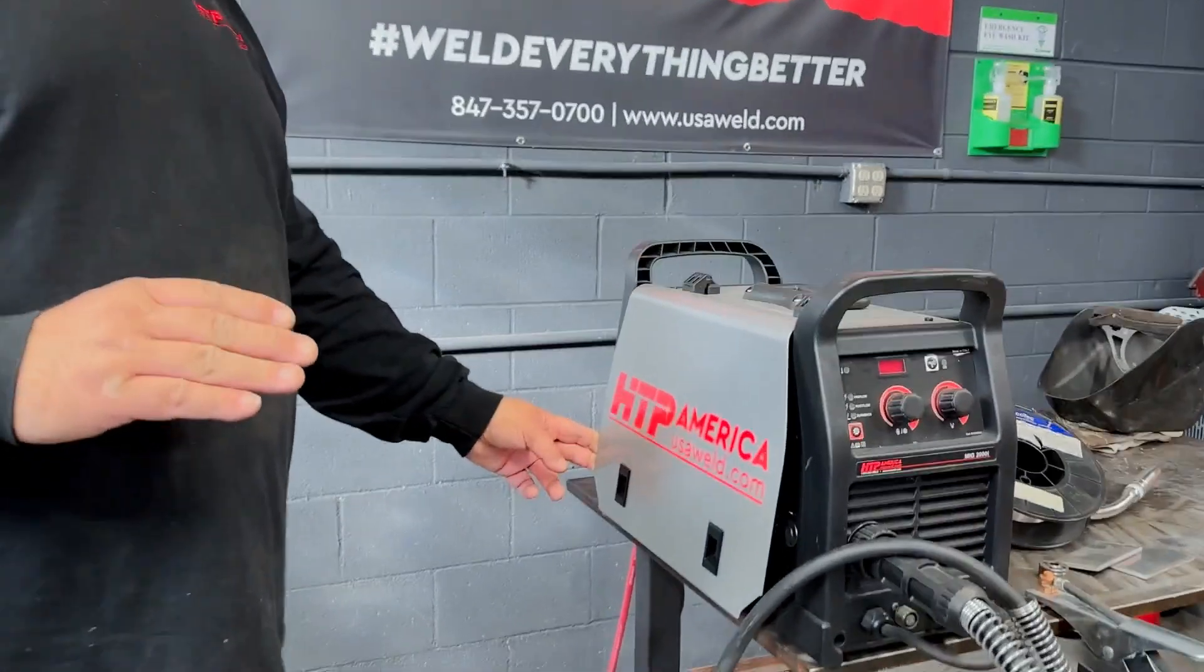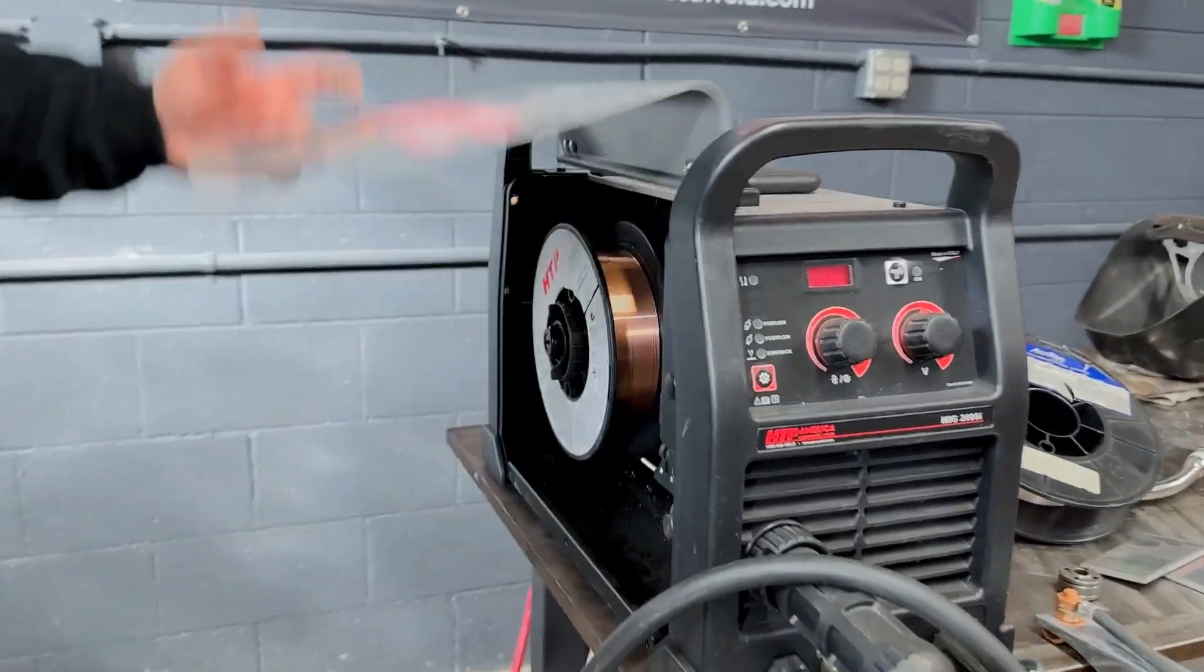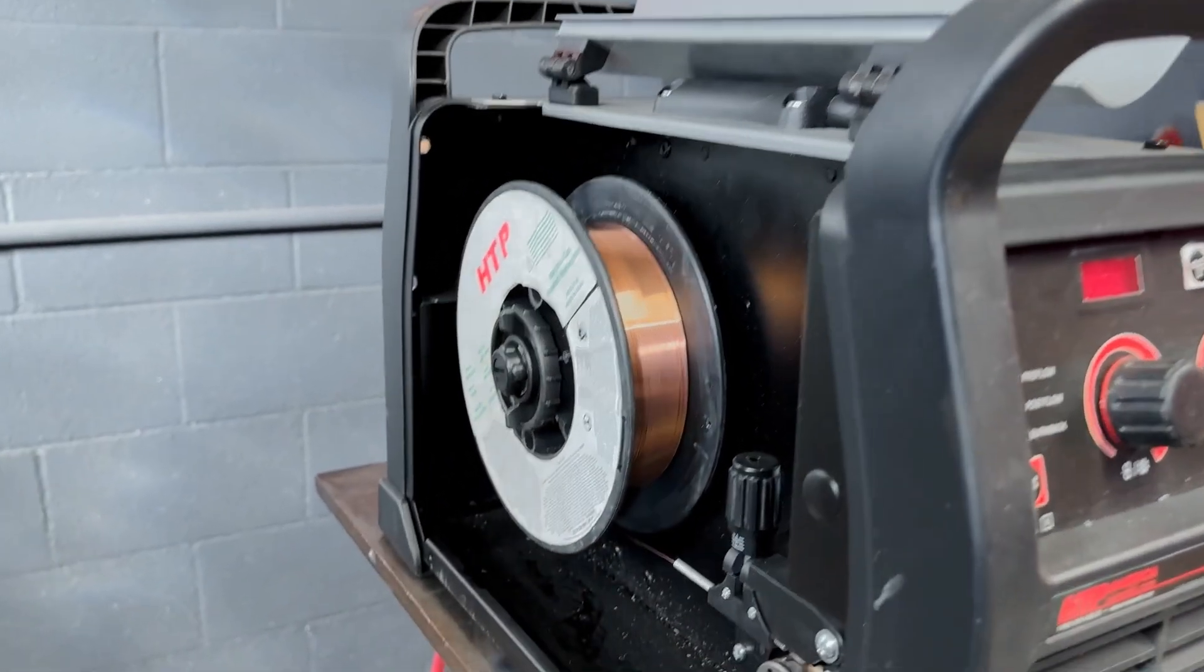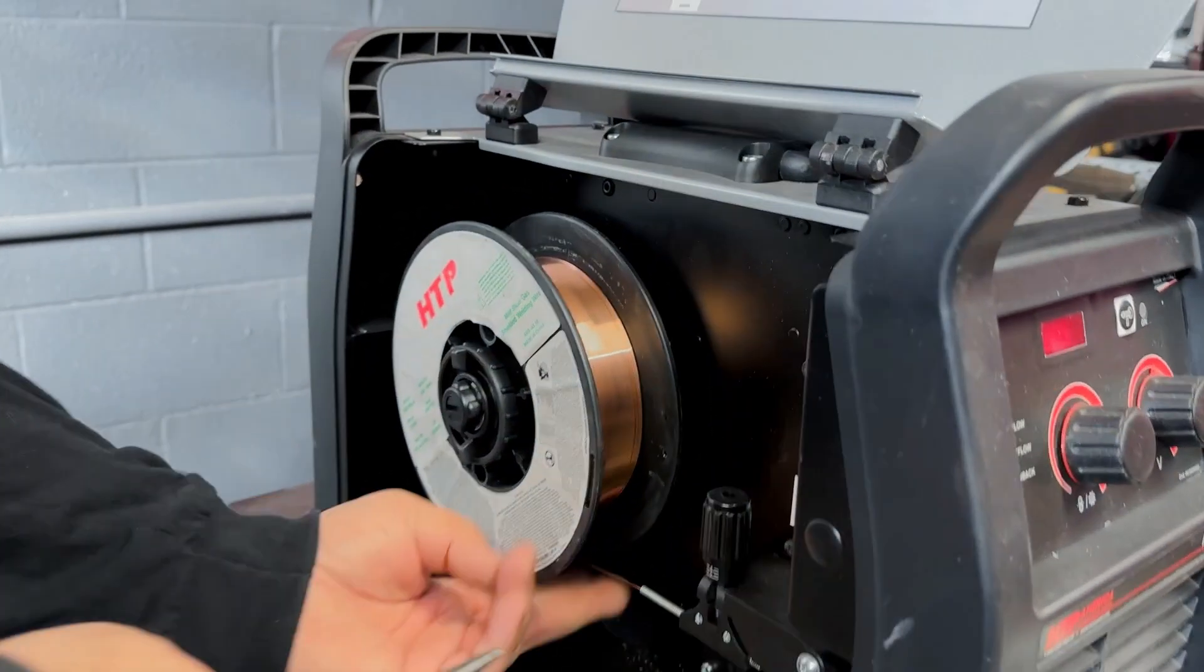We're now switching the machine over from steel to aluminum. So here are the steps we need to make. First of all, remove the steel wire.